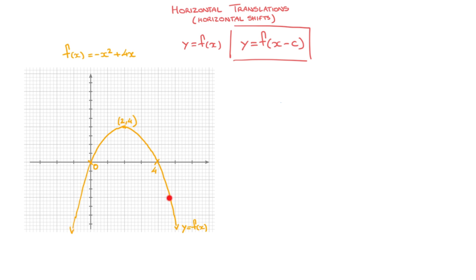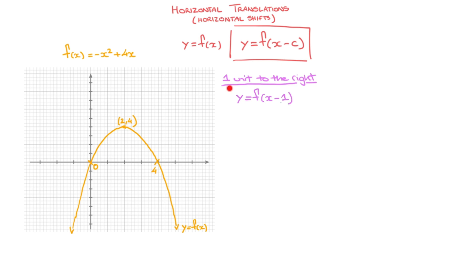Let's look at a first example. The curve here has equation y equals f of x, where f of x is negative x squared plus 4x. Now say I wanted to shift or translate this curve one unit to the right. To do that, I replace c by one — so I'm translating this curve one unit to the right — and I define the new function whose equation is y equals f of x minus one. Notice that to move the curve one unit to the right, we replace x inside f of x by x minus one. Towards the end of this video, I'll explain exactly why we subtract the one here.